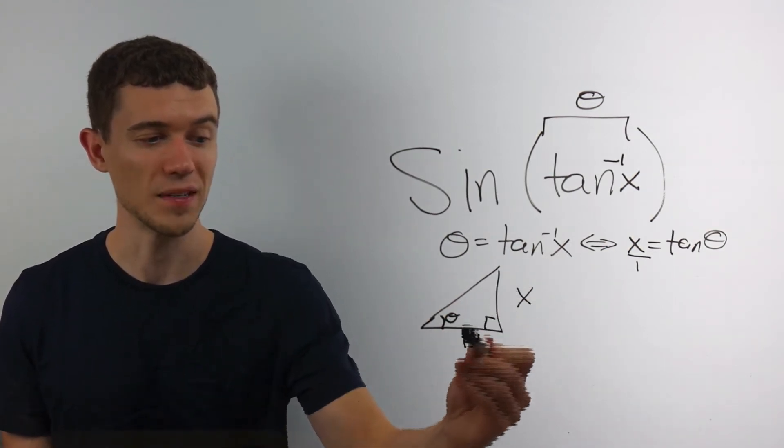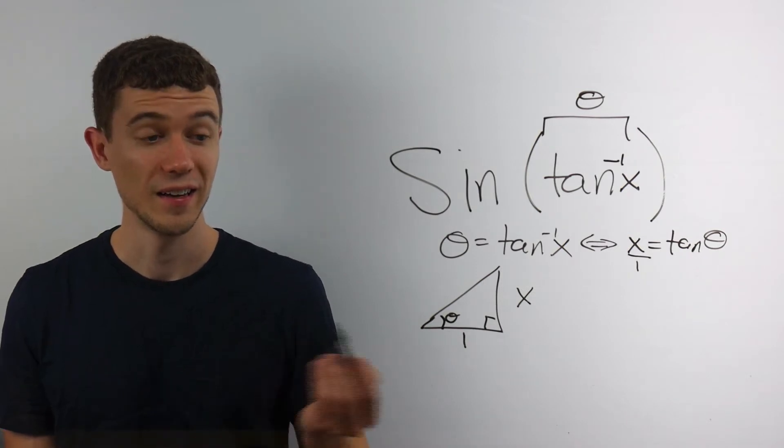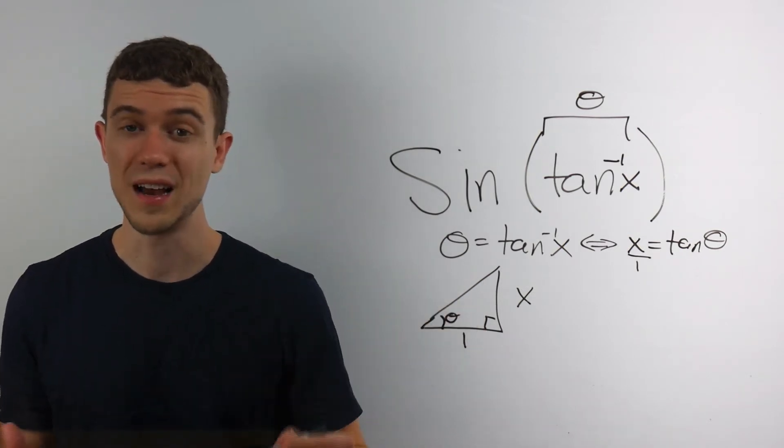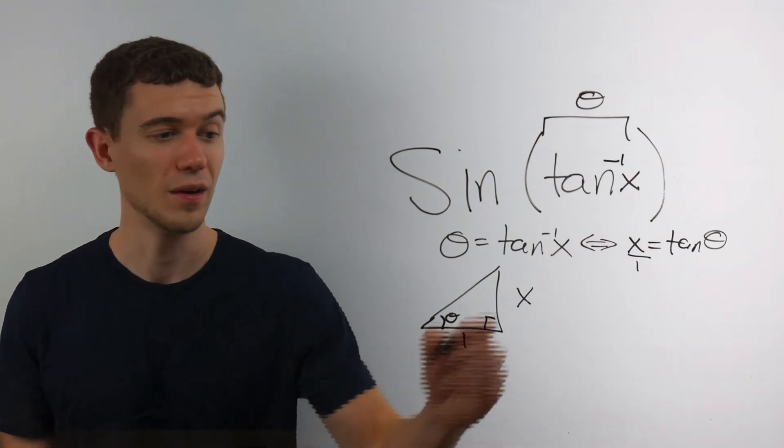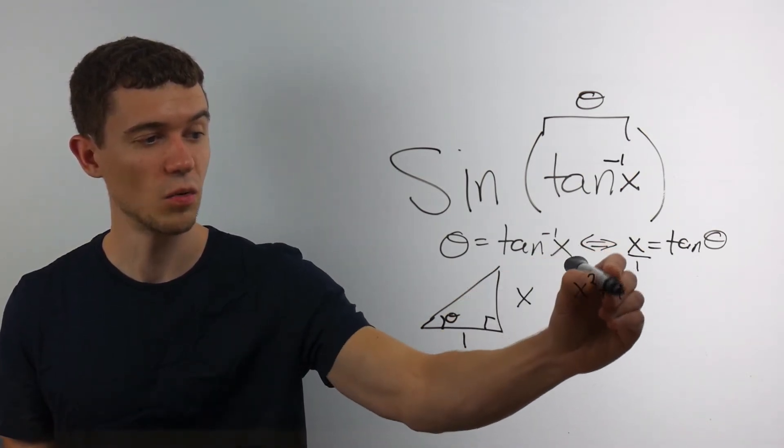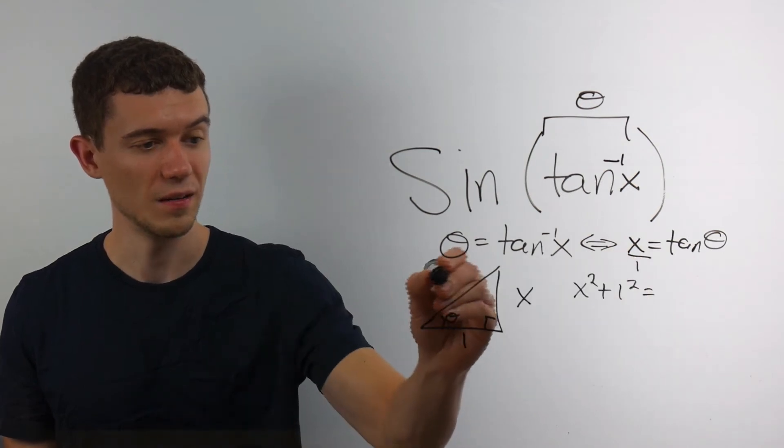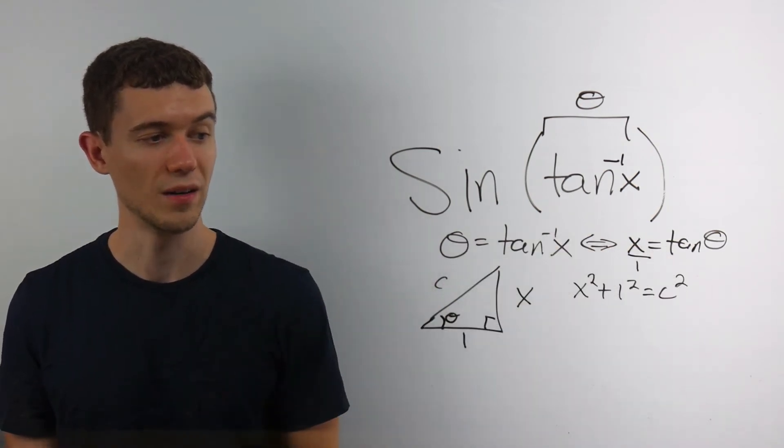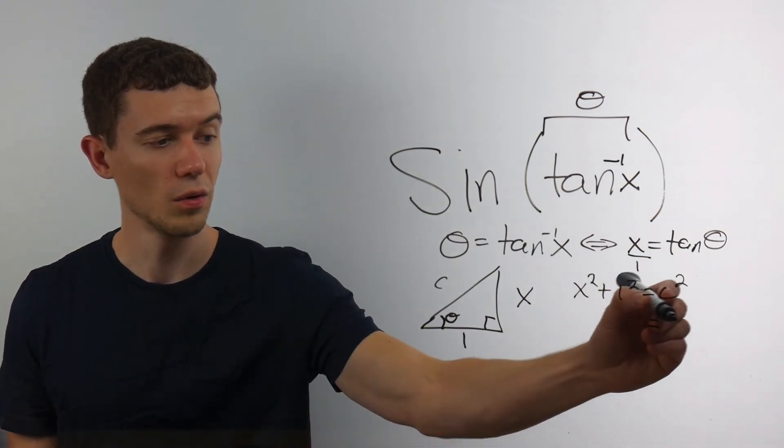Now you can find the third side, the hypotenuse, by using the Pythagorean theorem. This side squared plus this side squared has to be, if I call it C, this side squared. Or in other words, C, our hypotenuse, must be the square root of x squared plus 1 squared.